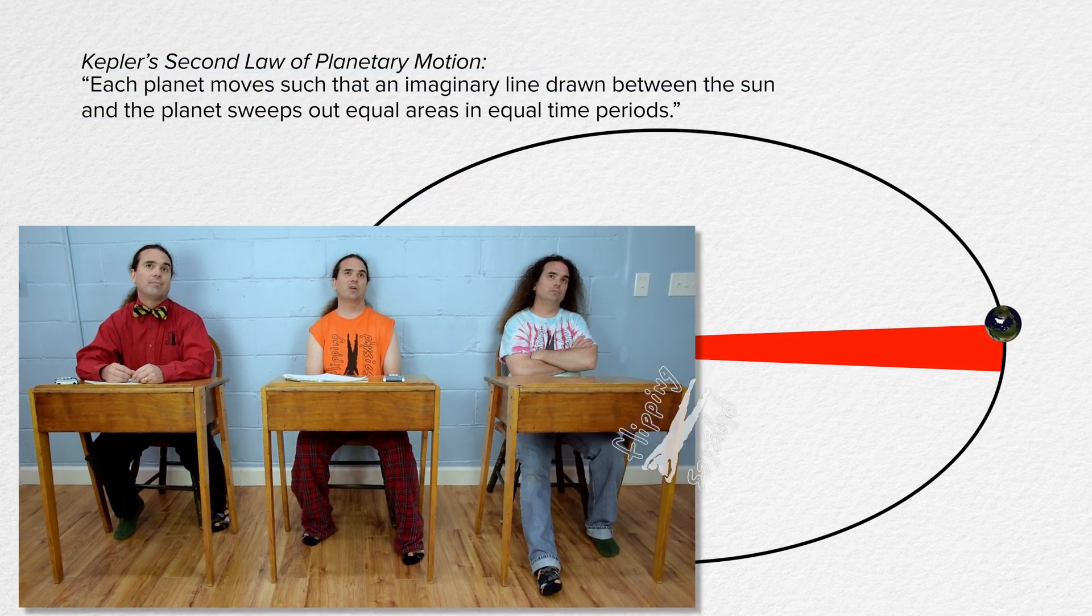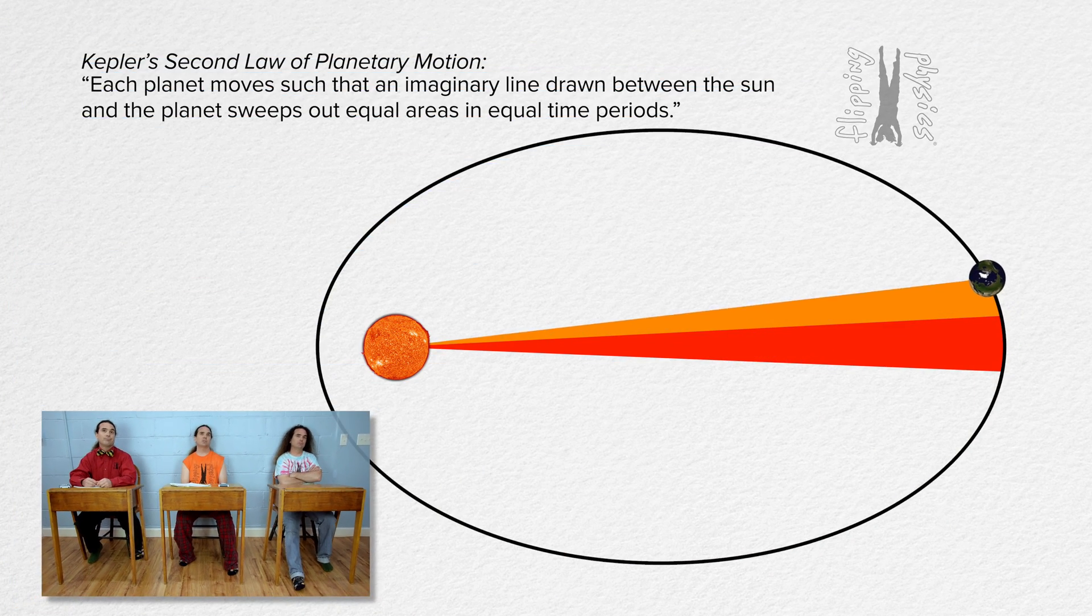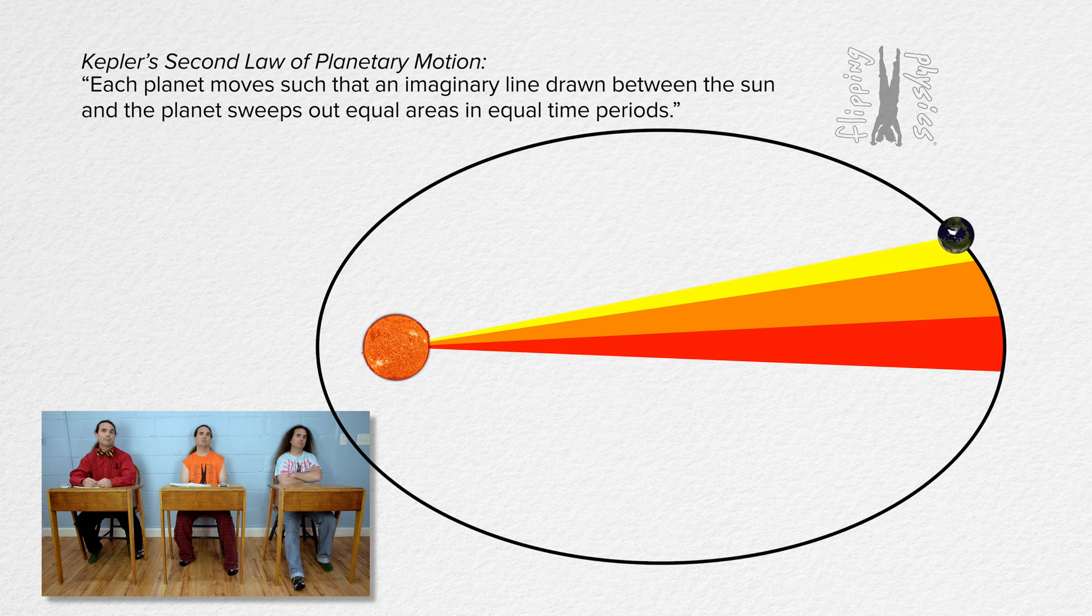Each planet moves such that an imaginary line drawn between the sun and the planet sweeps out equal areas in equal time periods. Thank you Bobby.